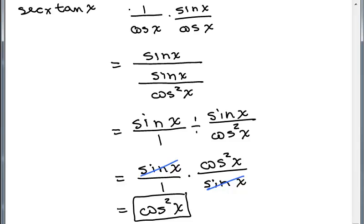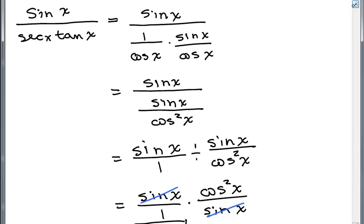So that's one way of simplifying the original, which was sine of x over secant x tangent of x. Now let me show you another way you might have thought of it.